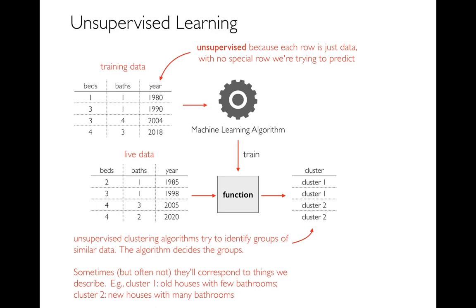For example, maybe there's one group of houses that are old and have few bathrooms, and there's these newer houses and they all have more bathrooms. There might be some similarities across columns. The function in this case is not only putting them in these different clusters or categories, but the machine learning algorithm itself decides what these categories are. That's why they have these kind of weird names like cluster one, cluster two. They're not something meaningful that a human came up with.